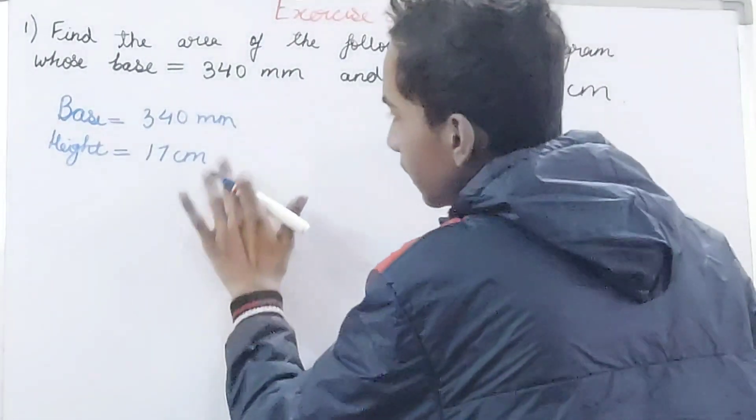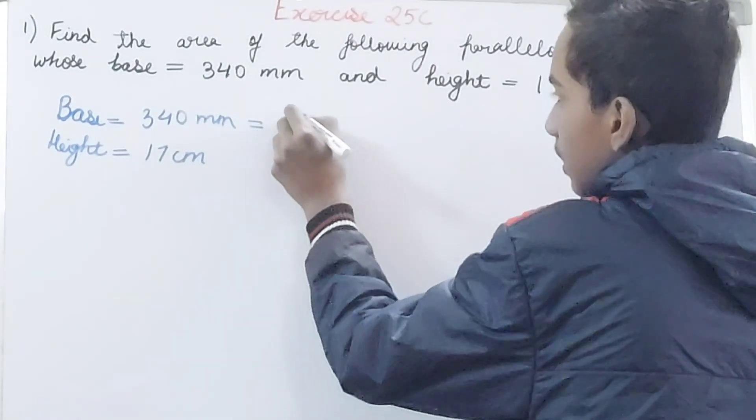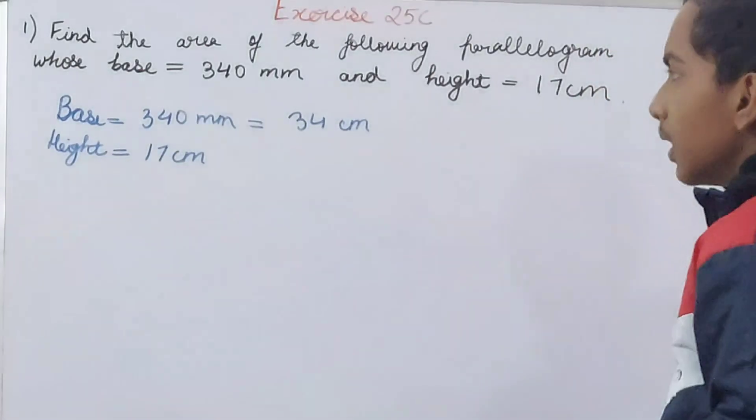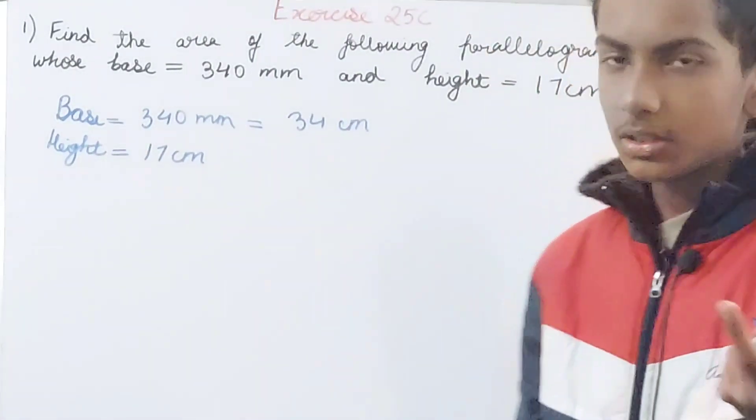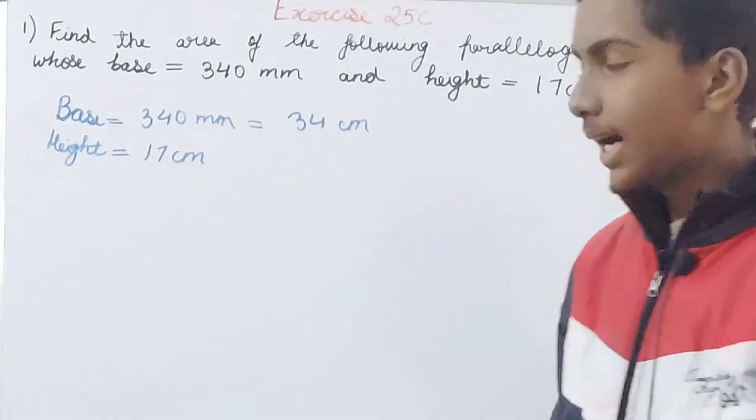So 340 millimeters will become 34 centimeters. One centimeter equals 10 millimeters, right? So just cut off this one zero: 34 centimeters. And height is already in centimeters.